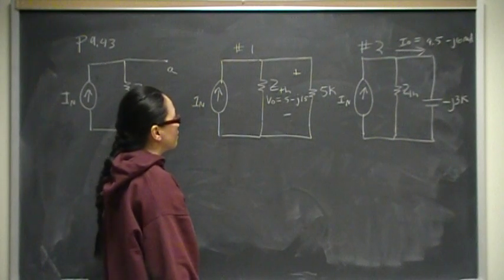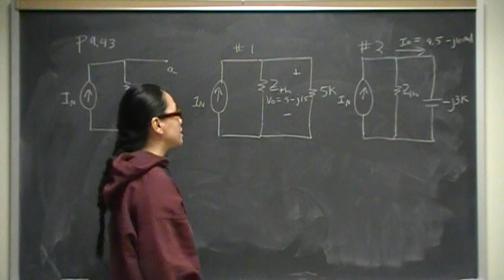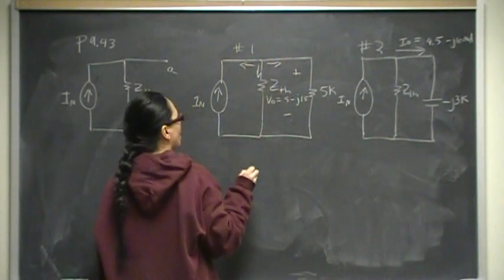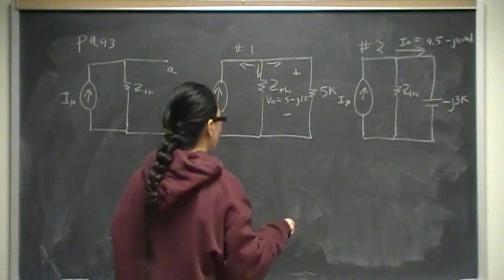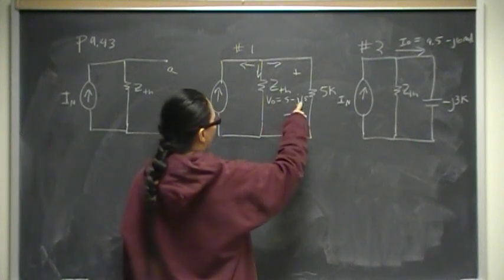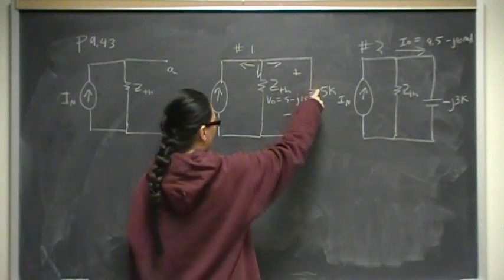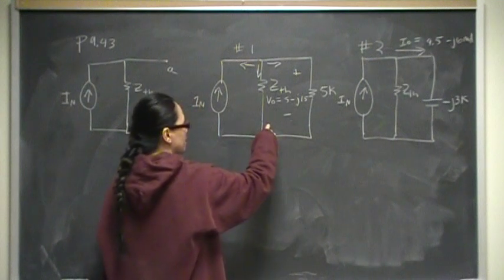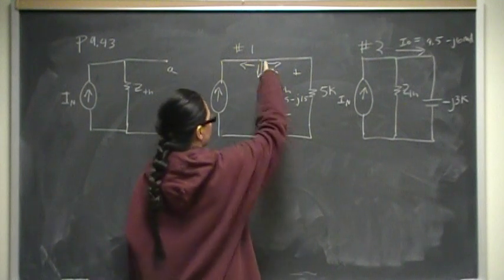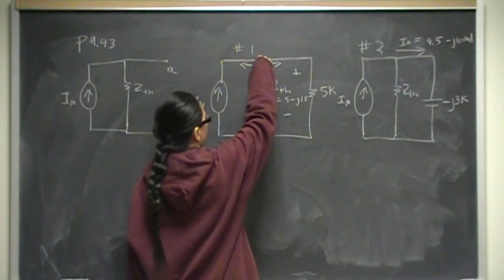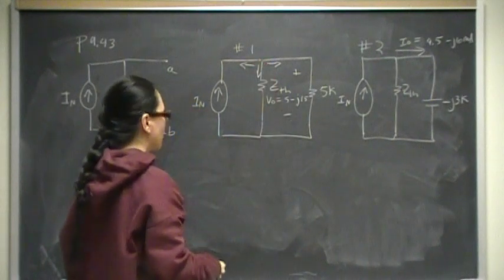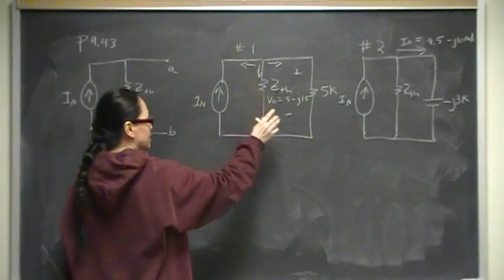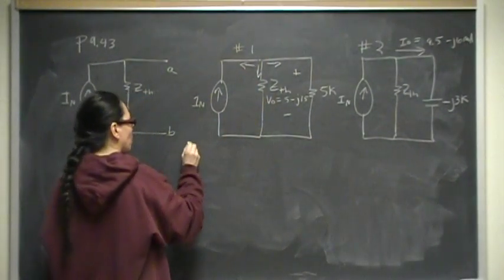KCL says that the sum of the currents away from the node is equal to zero. That means this plus this plus this equals zero. They gave me the information that this voltage drop across the 5K resistor is 5 minus J15. Since it is in parallel with Z-Thevenin, that must mean that Z-Thevenin has the same voltage because voltages in parallel are the same. Let's set up equation number one.